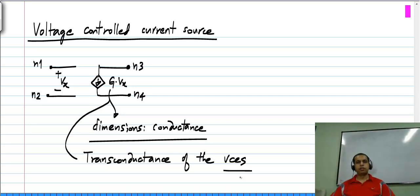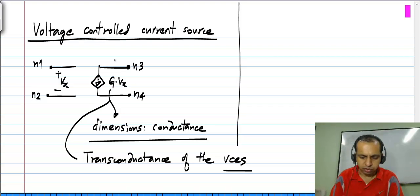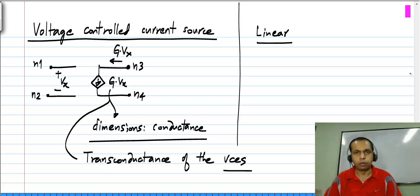It is common to abbreviate voltage controlled current source as VCCS, similarly for all the other control sources. Again, because this current is g times Vx which is a linear function of Vx, this control source is linear. As I said, all the control sources we consider will be linear.